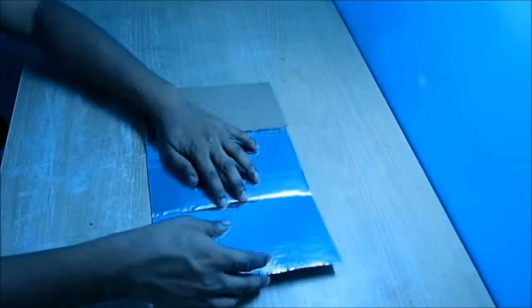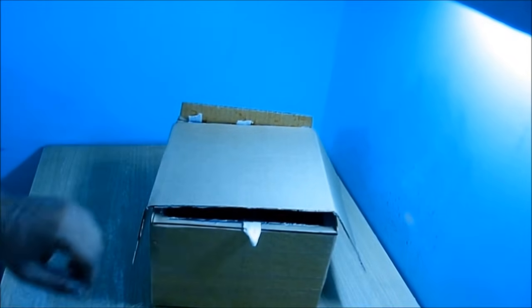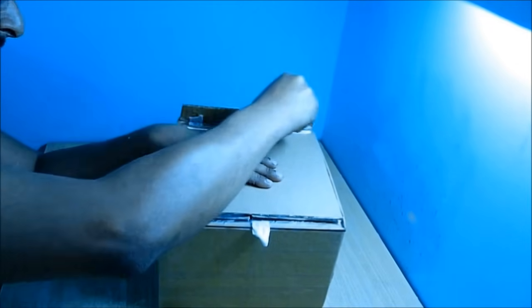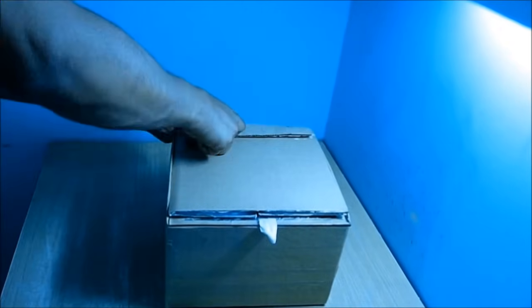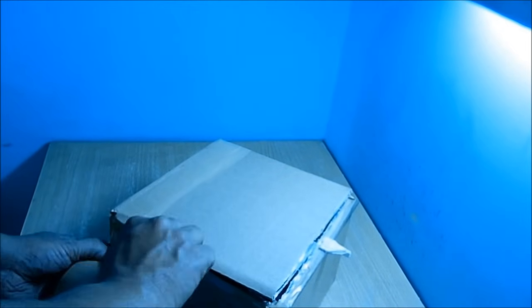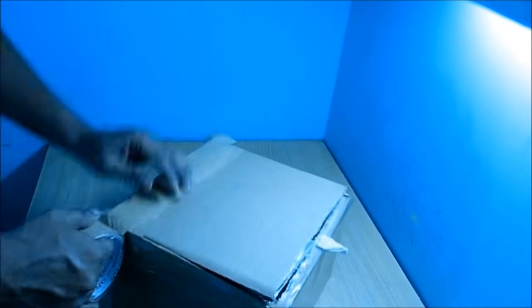Now we have to stick it on top of this box. Put glue and stick the extra cardboard coming out from that using glue and brown tape, like this.